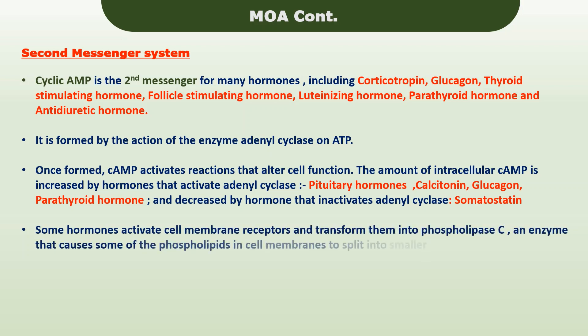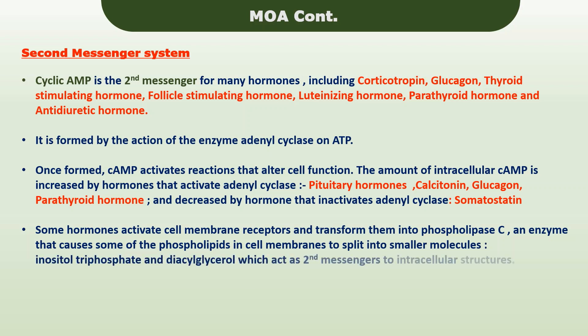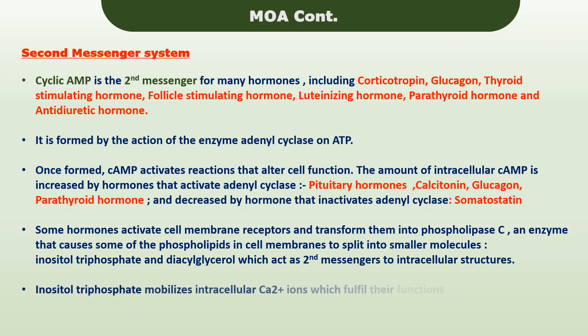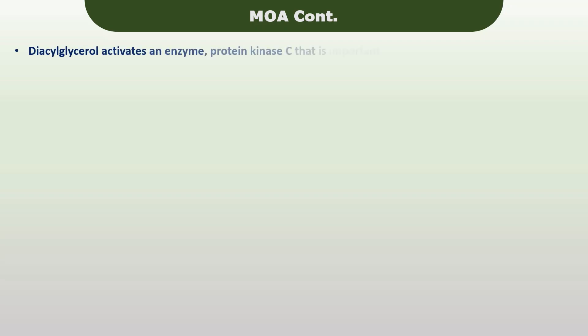Inositol triphosphate (IP3) and diacylglycerol (DAG) are the smaller molecules formed as a result of splitting of phospholipids, and they act as secondary messengers to intracellular structures. Inositol triphosphate mobilizes intracellular calcium ions, which fulfill their function as secondary messengers. Diacylglycerol activates protein kinase C, which is important in cell reproduction.